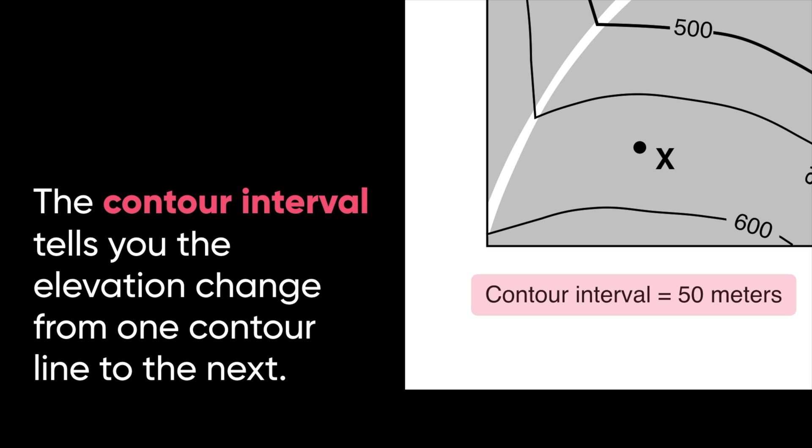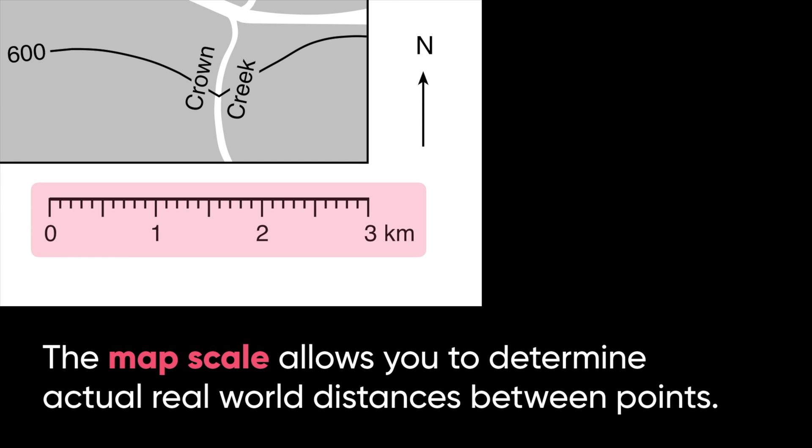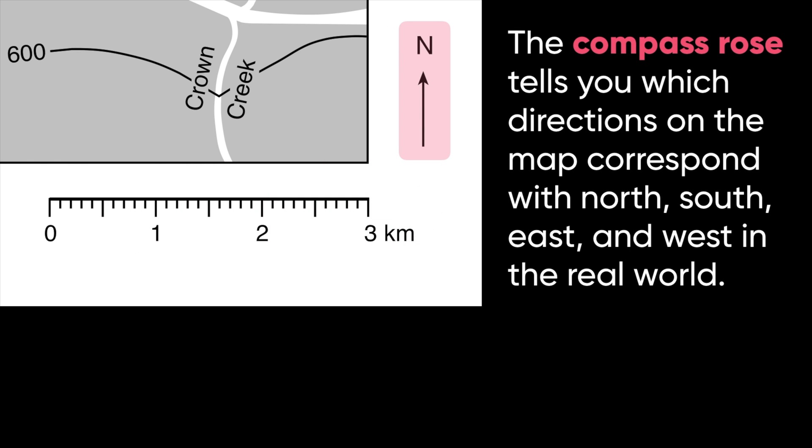Fortunately, even if you're not given the contour interval, you can usually figure out what it is by examining the lines. And we'll see an example of that in a moment. Let's look at some other map features. Most maps are going to include a map scale. And this lets you determine the real-world distances between points as represented on the map. So, for example, let's say I want to know how far apart points Y and Z were in the real world. I could use this map scale to figure out how many kilometers apart they are. A future video will take a look at how exactly we use a map scale. Finally, we'll notice that we also have a compass rose. And this is going to tell you the directions on the map and how they correspond with real-world north, south, east, and west. This allows you to orient yourself when using a topographic map.